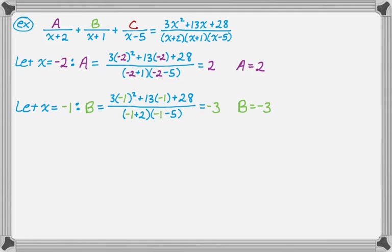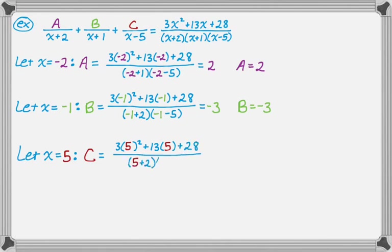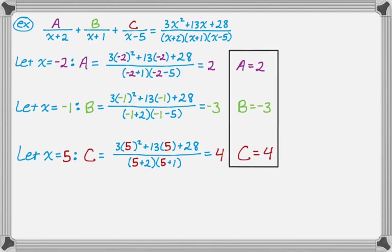To find C, since C is over x minus 5, I let x equal 5. Cover up the x minus 5 on the right-hand side and substitute 5 for every other x. The numbers get pretty big, but working it out gives C equals 4. So A equals 2, B equals negative 3, and C equals 4. The cover-up method is really useful — if you take Calc BC, you'll be using it a lot because it makes problems much quicker.